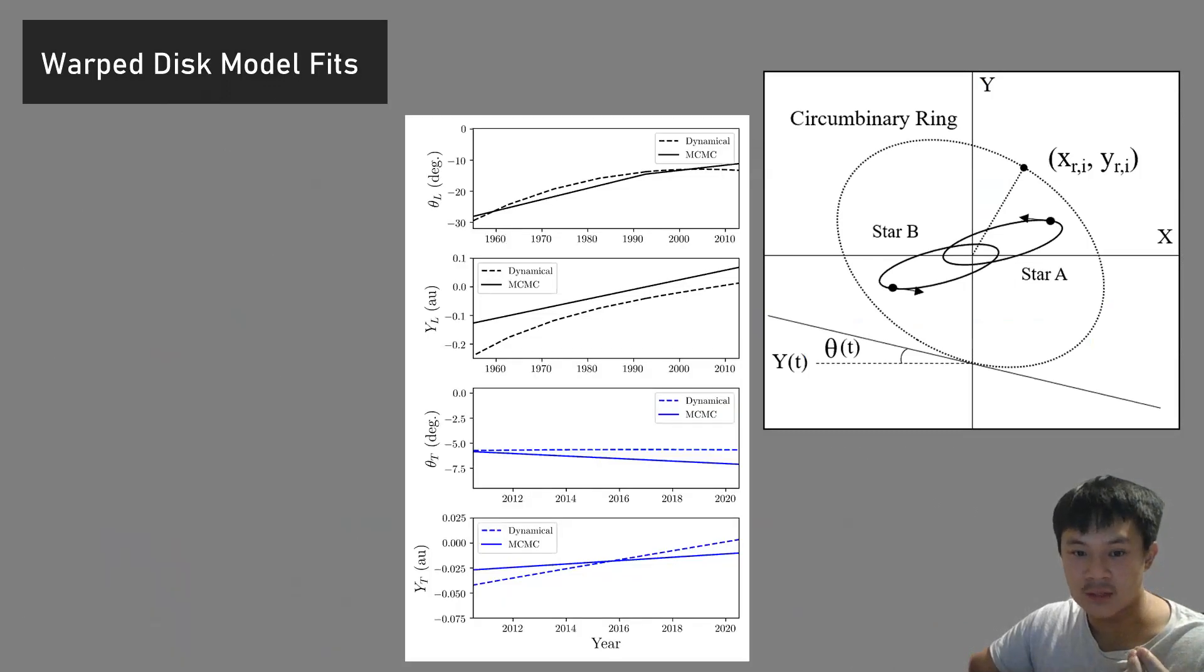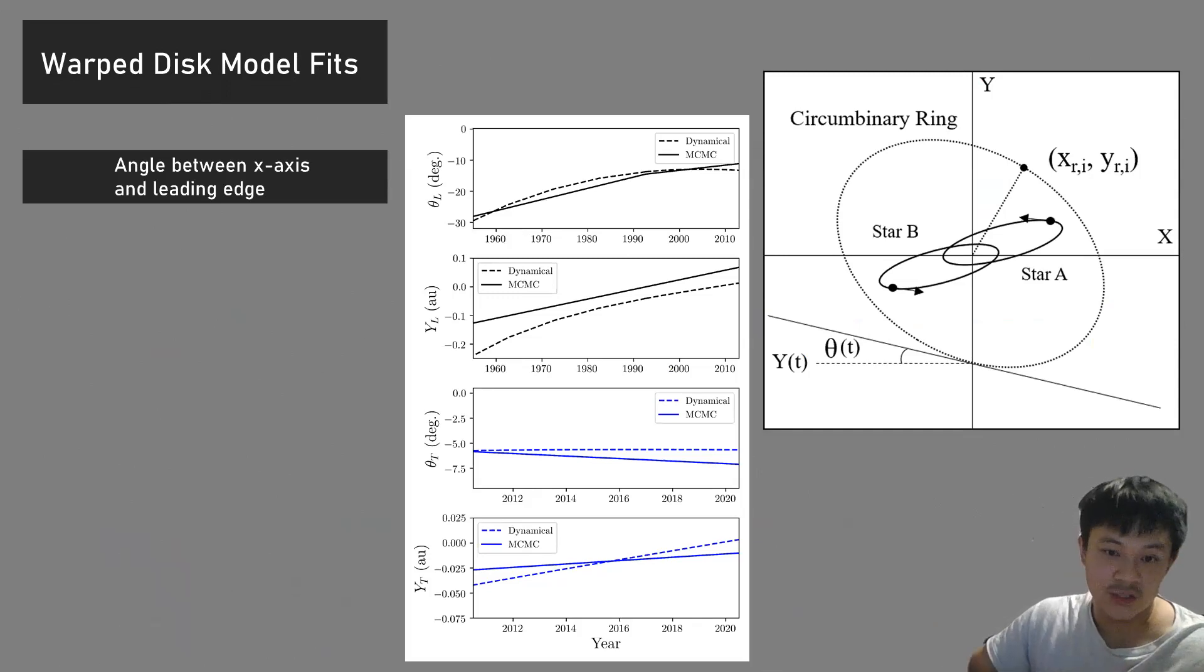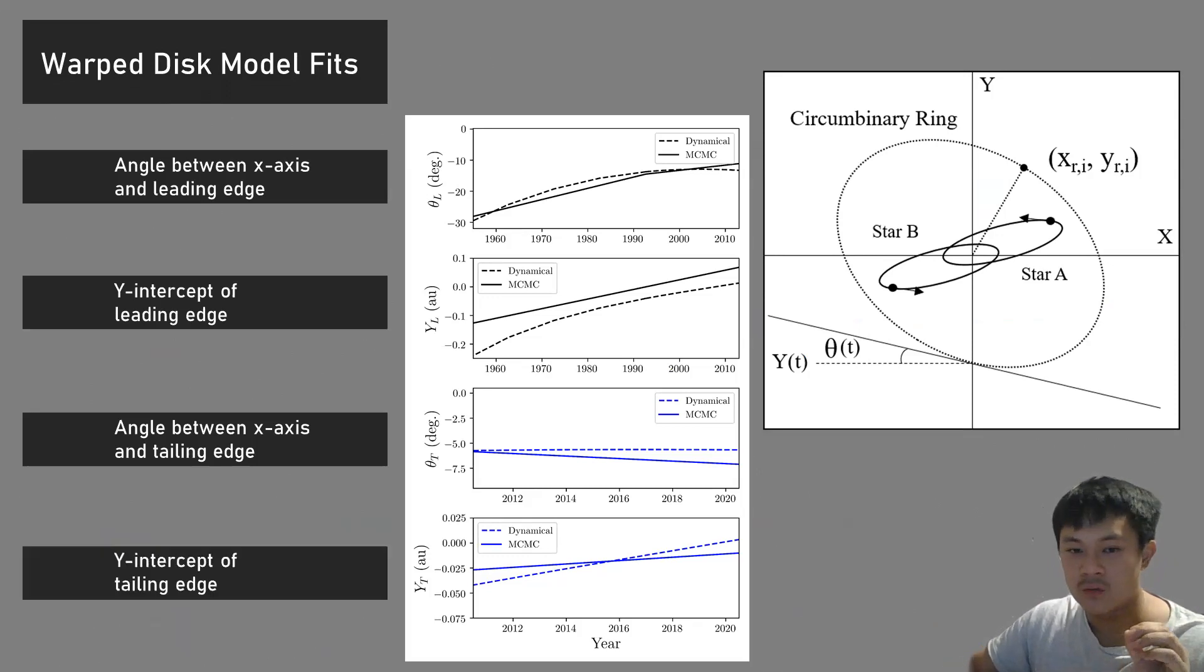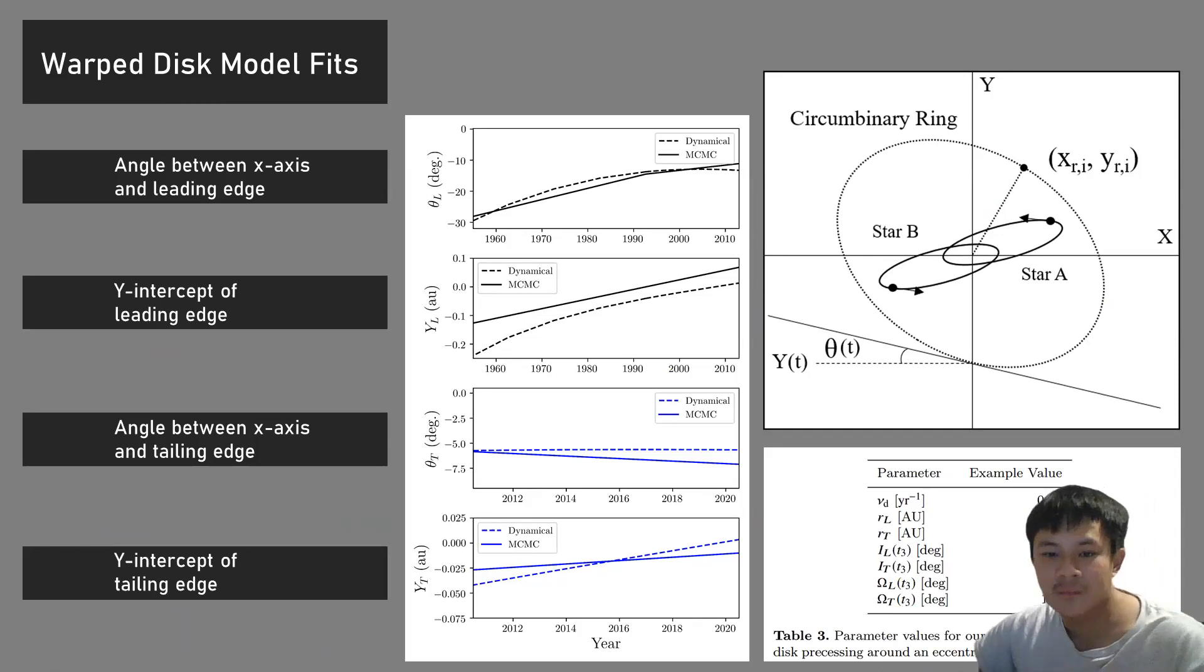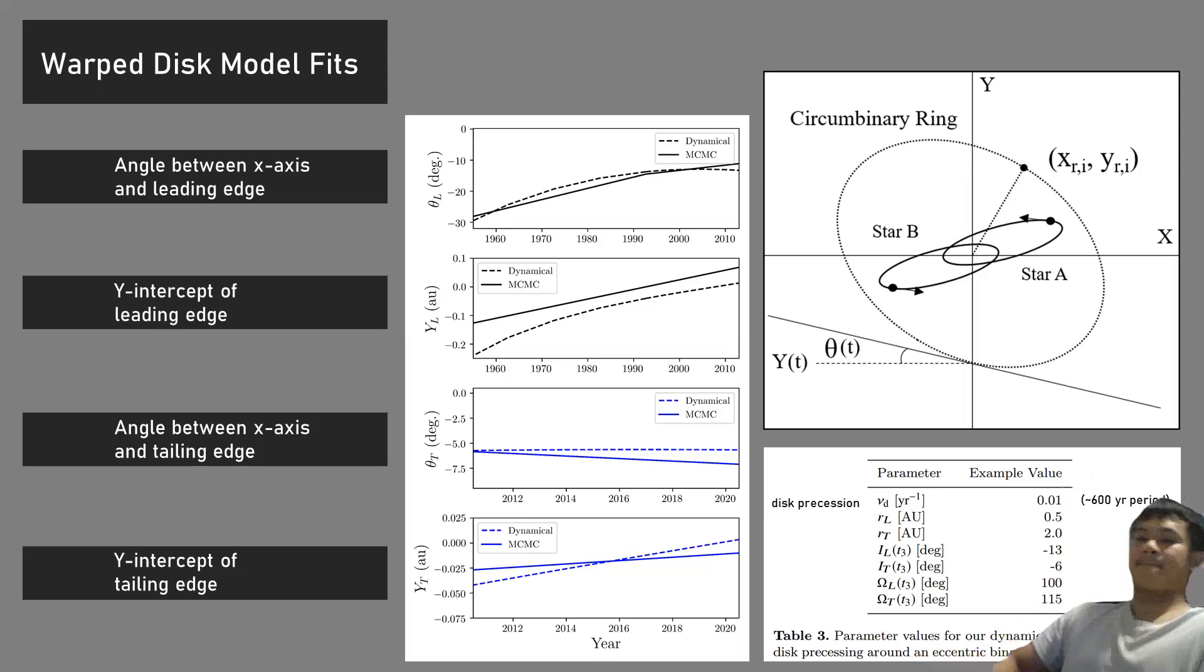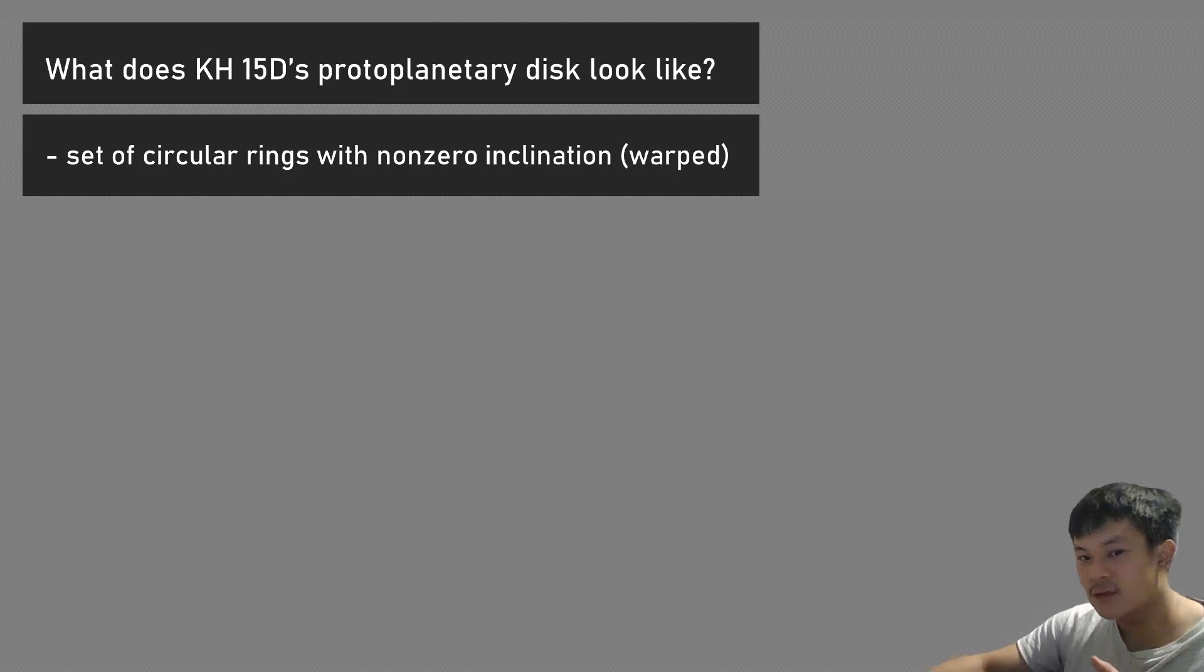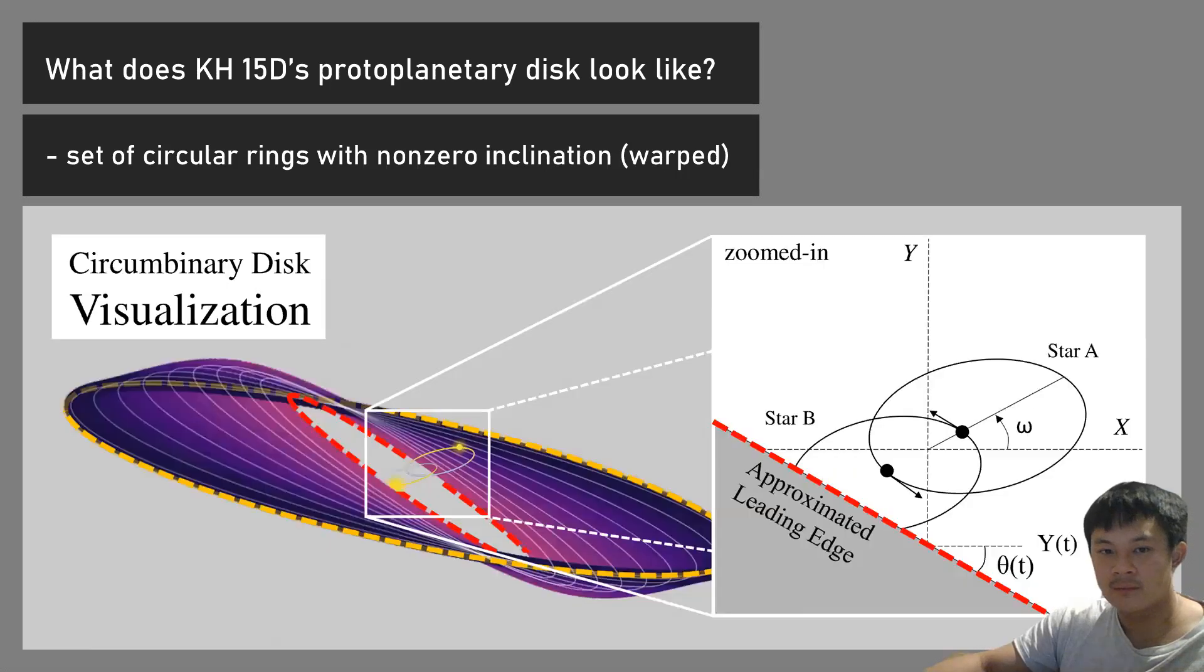Here are our model fits. The angle between the x-axis and the leading edge is theta, with y-intercepts for both edges. The disk precession rate is about 6,600 years. The inner disk radius is about 0.5 AU, outer radius 2 AU. Inner and outer inclinations are about 13 and 6 degrees. Inner twist or longitude of the ascending node is 100 degrees, then 150 degrees. Those are our fits. Our protoplanetary disk is a set of circular rings with non-zero inclination, with inner radius at 0.5 AU and outer at 2 AU, plus inner and outer inclinations.